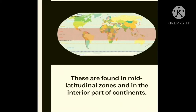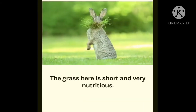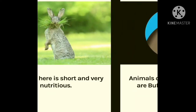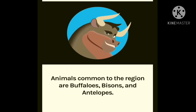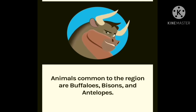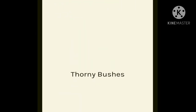The second type of grassland is the temperate grassland. These are found in the middle latitudinal zones and in the interior part of the continents. The grass here is short and very nutritious. Animals common to the region are buffaloes, bisons and antelopes.